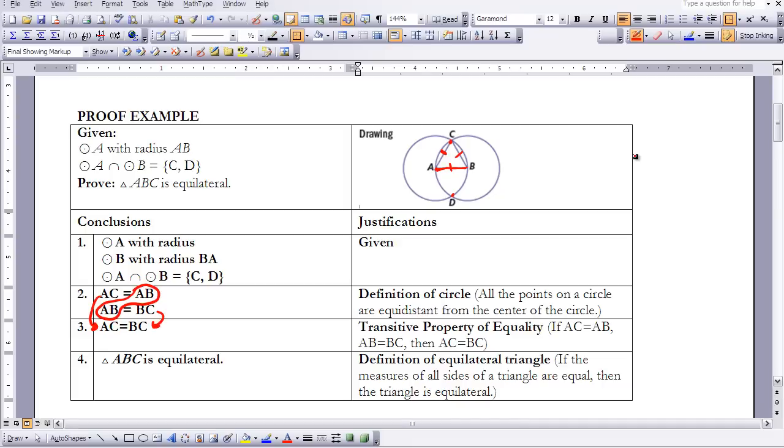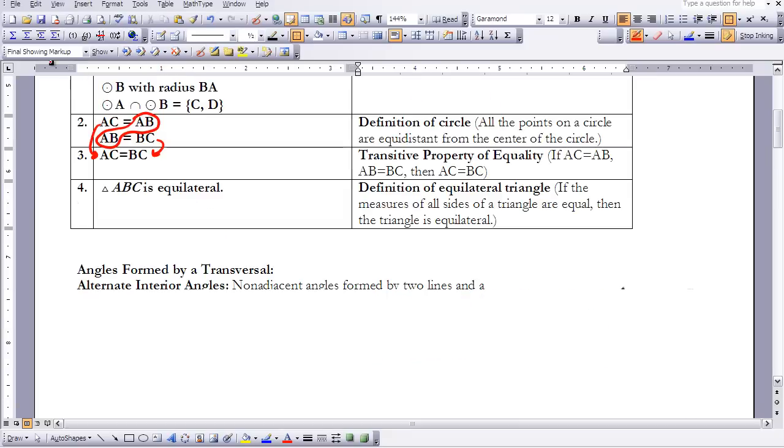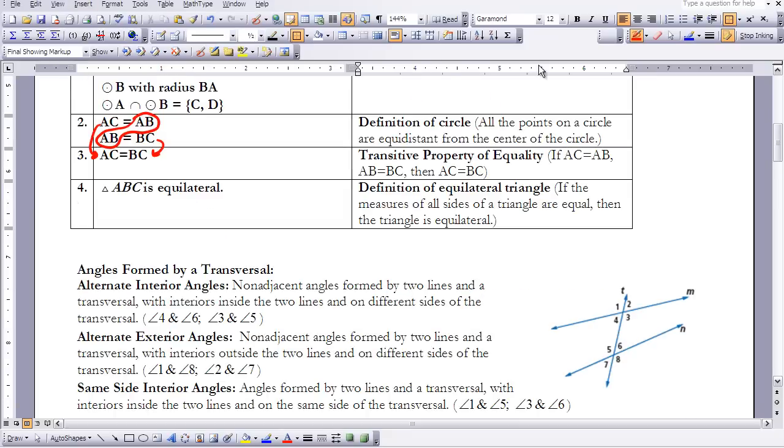Which now, because I have all my sides being congruent to each other, I'm sorry, equal to each other, I can now get to my proof statement. Triangle ABC is equilateral because of the definition of an equilateral triangle. So this is our first formal proof, and it's an example that you can use when working with some of the other proofs that we have in this lesson.